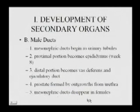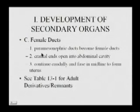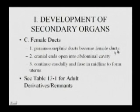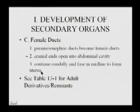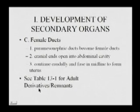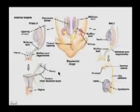The mesonephric ducts disappear in females. In females, the pair of paramesonephric ducts become the female ducts — the cranial ends open into the abdominal cavity as the fallopian (uterine) tubes, and they continue caudally, fusing in the midline to form the uterus. We refer to Table 13-1 for adult derivatives and remnants, which we will review as we proceed.